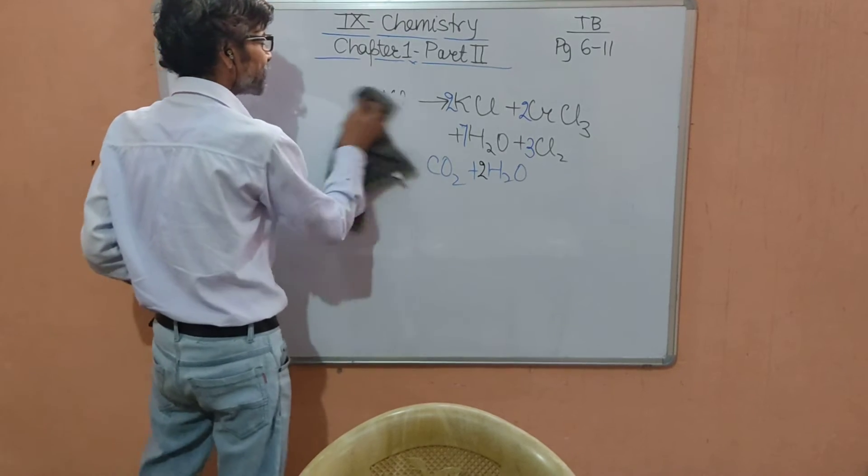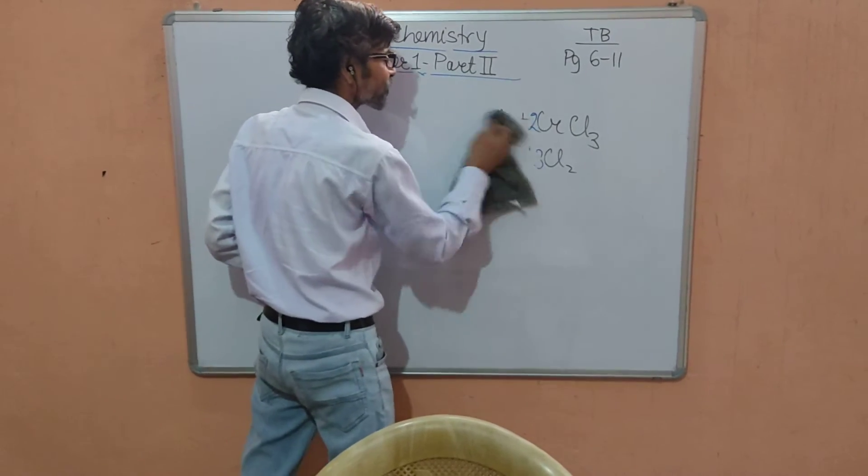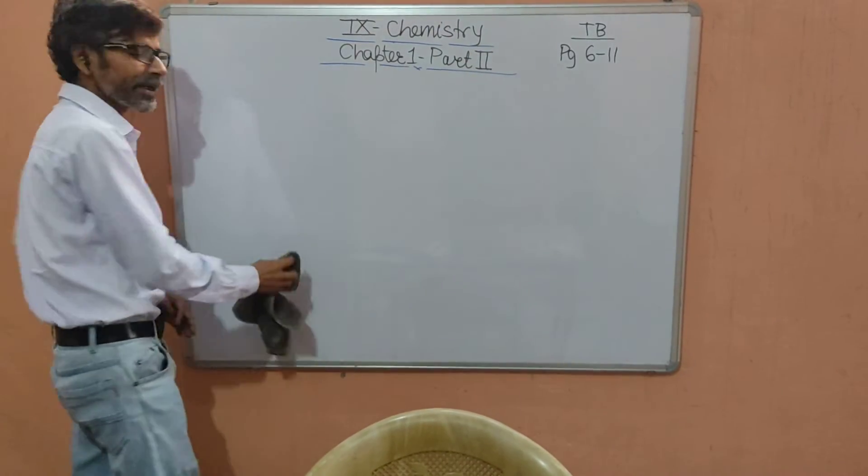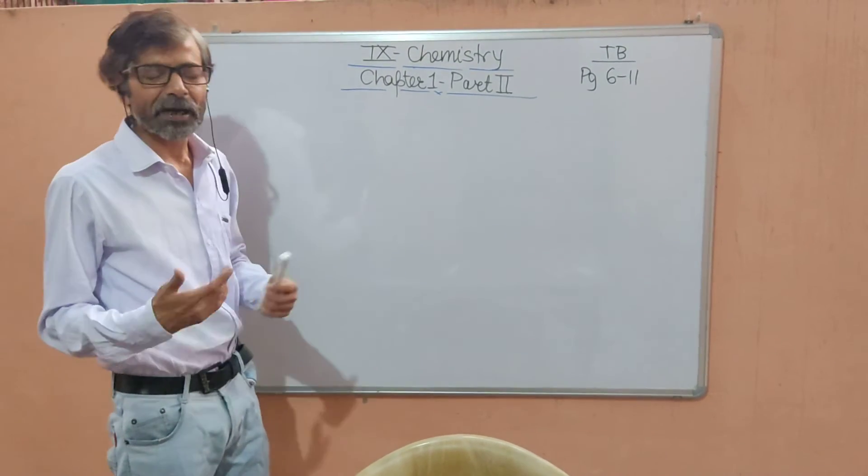After balancing the chemical equation, the atomic weight. Children, the atom is a very very small commodity due to which its weight is very very small and we cannot take the weight on any scale.